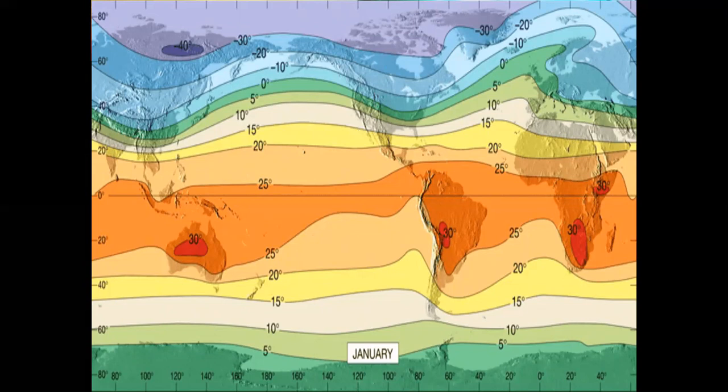The presence of warm ocean currents — the Gulf Stream and North Atlantic Drift — makes the North Atlantic Ocean warmer, and the isotherms bend towards the coast. Over land, the temperature decreases sharply and the isotherms bend towards the equator in Europe. In the Southern Hemisphere, the effect of the oceans is well pronounced due to few land masses. The isotherms are more or less parallel to the latitudes and the variation in temperature is more gradual than in the Northern Hemisphere.